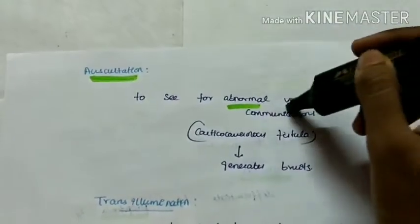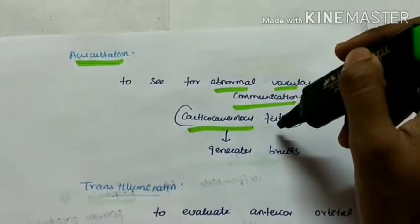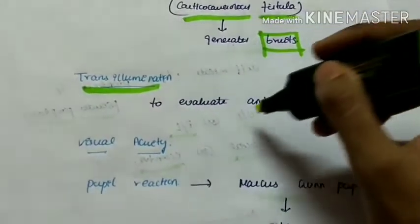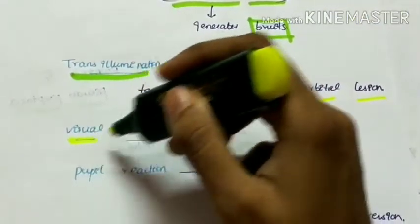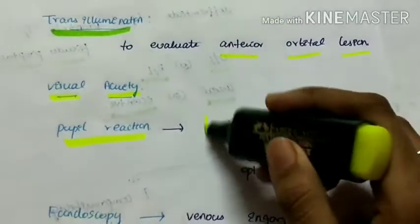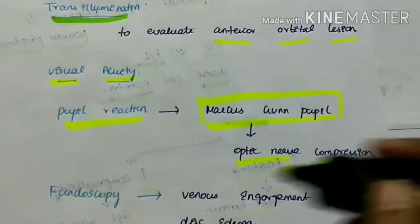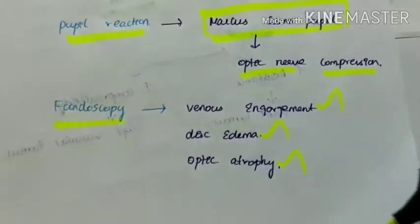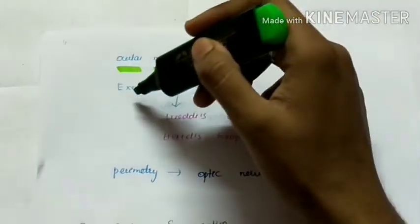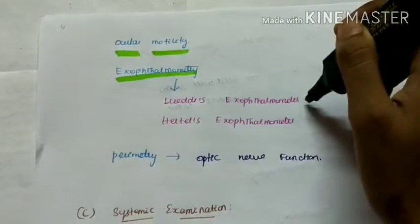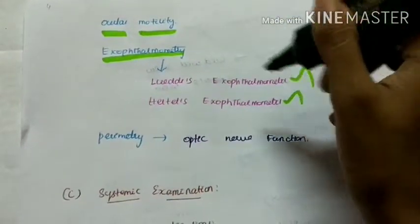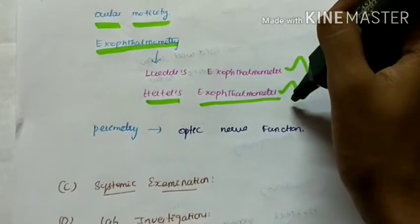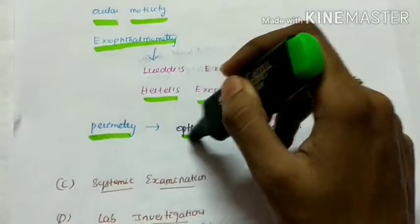We auscultate to detect abnormal vascular communications — in carotico-cavernous fistula a generalised bruit can be heard. On transillumination, a positive result indicates an anterior orbital lesion. We test visual acuity and pupillary reaction; a Marcus Gunn pupil may be present due to optic nerve compression. Fundoscopy may show venous engorgement, optic disc edema, or optic atrophy. We also check ocular motility and perform exophthalmometry using Hertel's exophthalmometer — the most commonly used — to measure the degree of exophthalmos. Perimetry is done to detect optic nerve function.